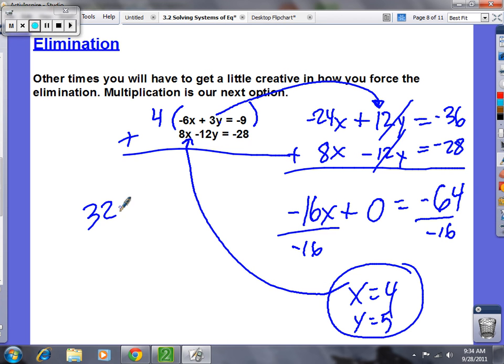32. Minus 12y equals -28. Solve for y. Minus 32, minus 32. So that cancels and you got -12y equals -60. Divide by -12. Y is 5.